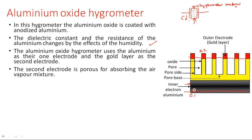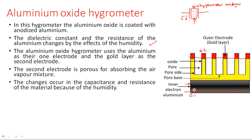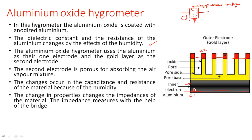The second electrode is porous for absorbing air vapor and moisture. It is designed to capture the moisture content present in the atmosphere. Whenever moisture content is absorbed, the internal capacitance is affected. Changes occur in the capacitance and resistance of the material because of humidity.